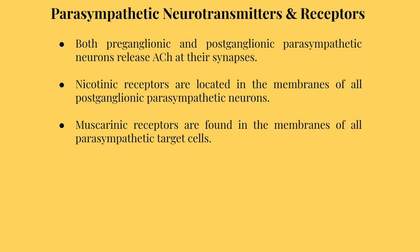Now let's talk about neurotransmitters and receptors in the parasympathetic division. Preganglionic and postganglionic parasympathetic neurons both release acetylcholine at their synapses, leading to an excitatory effect. There are two types of cholinergic receptors: nicotinic and muscarinic. Nicotinic receptors in the parasympathetic division are located in the membranes of all postganglionic parasympathetic neurons, whereas muscarinic receptors are found in the membranes of the parasympathetic target cells.